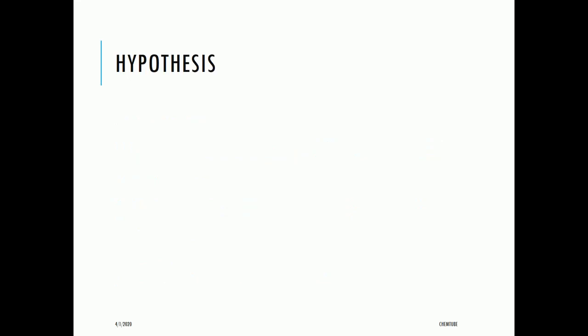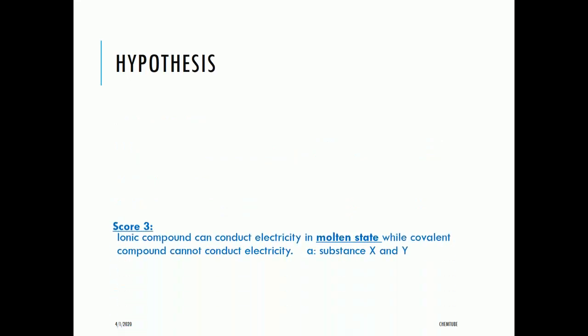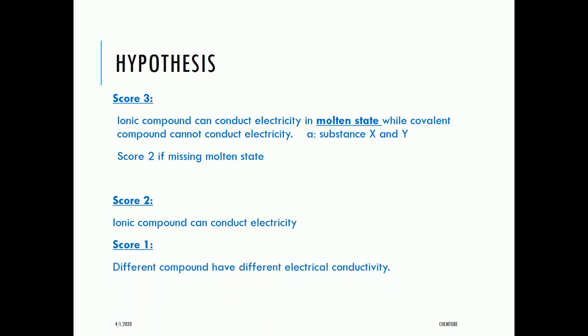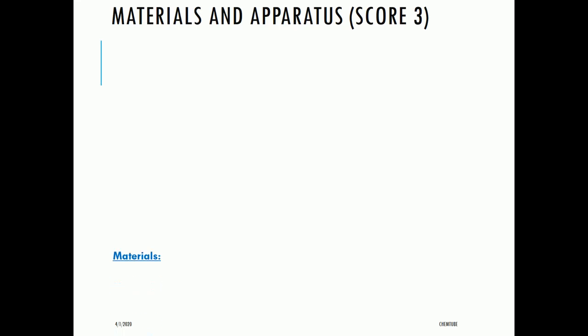For the hypothesis, relate the MV and RV with direction. Score 3: 'Ionic compounds can conduct electricity in molten state while covalent compounds cannot conduct electricity' — we also accept substance X and Y. Score 2: missing 'molten state' — 'ionic compound can conduct electricity.' Score 1: 'Different compounds have different electrical conductivity' — this doesn't show direction.